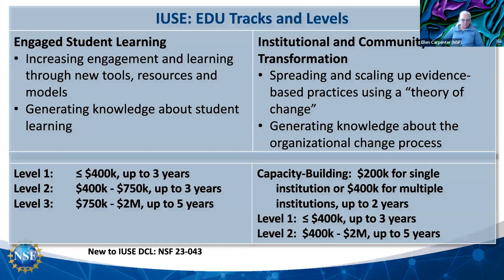Within the Engaged Student Learning track, we have three funding levels. Level one proposals can be supported for up to $400,000 for up to three years. Level two proposals range from $400,000 to $750,000, again for up to three years. Level three proposals support work in the range of $750,000 to $2 million for up to five years. The level you apply to should be determined by the scale and scope of your project — how many students, faculty, and institutions you're engaging. There is no expectation that you go through these levels sequentially.